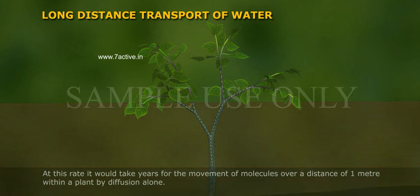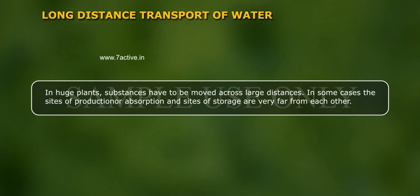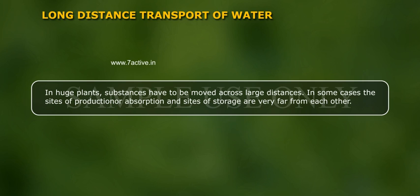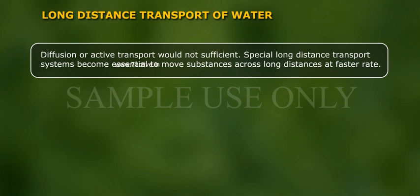it would take a year for the movement of molecules over a distance of 1 metre by diffusion alone. In huge plants, substances have to be moved across large distances. In some cases, the sites of production or absorption and sites of storage are very far from each other. Diffusion or active transport would not be sufficient, so special long distance transport systems become essential to move substances across long distances at a faster rate.